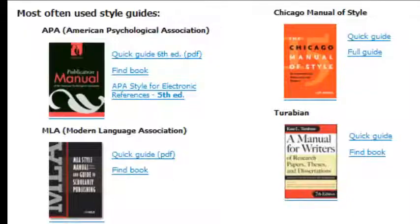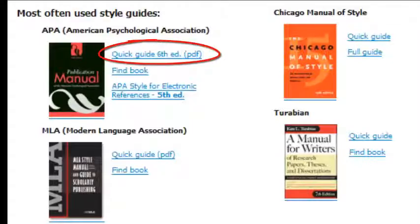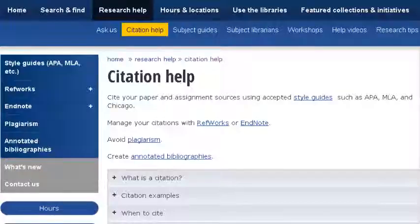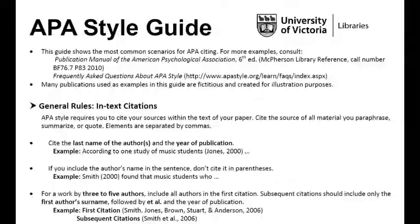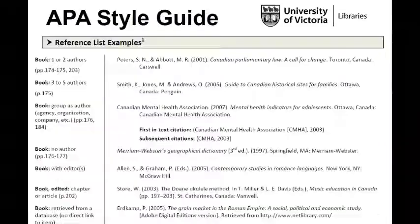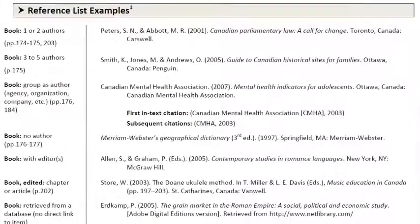You can find examples of Chicago, MLA, and APA in the Quick Guides on the Research Help page under Citation Help. The guide gives precise rules for each part of the bibliography or reference list, and an example of properly formatted reference lists, which demonstrates every possible type of source.